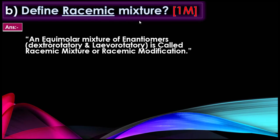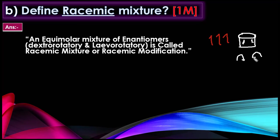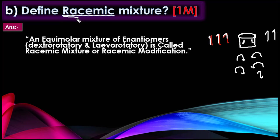The last question of this module: define racemic mixture — a 1-mark question. An equimolar mixture of enantiomers — dextrorotatory and levorotatory — is called a racemic mixture or racemic modification. Don't get confused between racemic mixture and racemic modification.